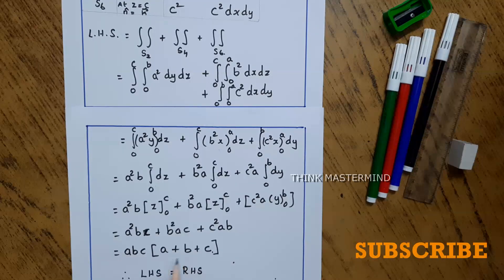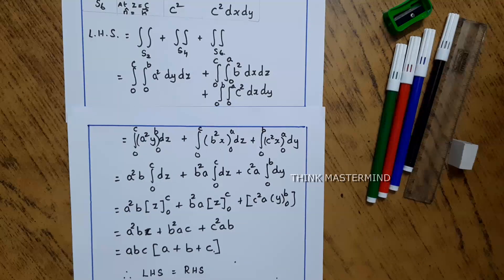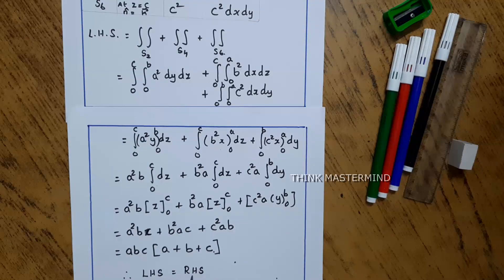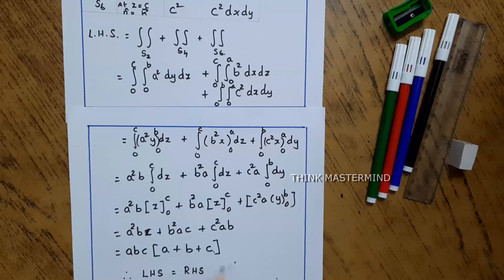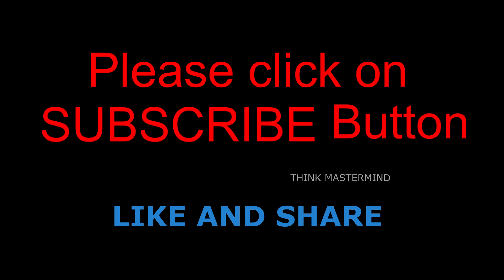We already found the same result abc(a + b + c) for the right hand side. Therefore, left hand side equals right hand side, and the Gauss Divergence Theorem is verified. Hope this video is useful for you. Please subscribe, like and share.